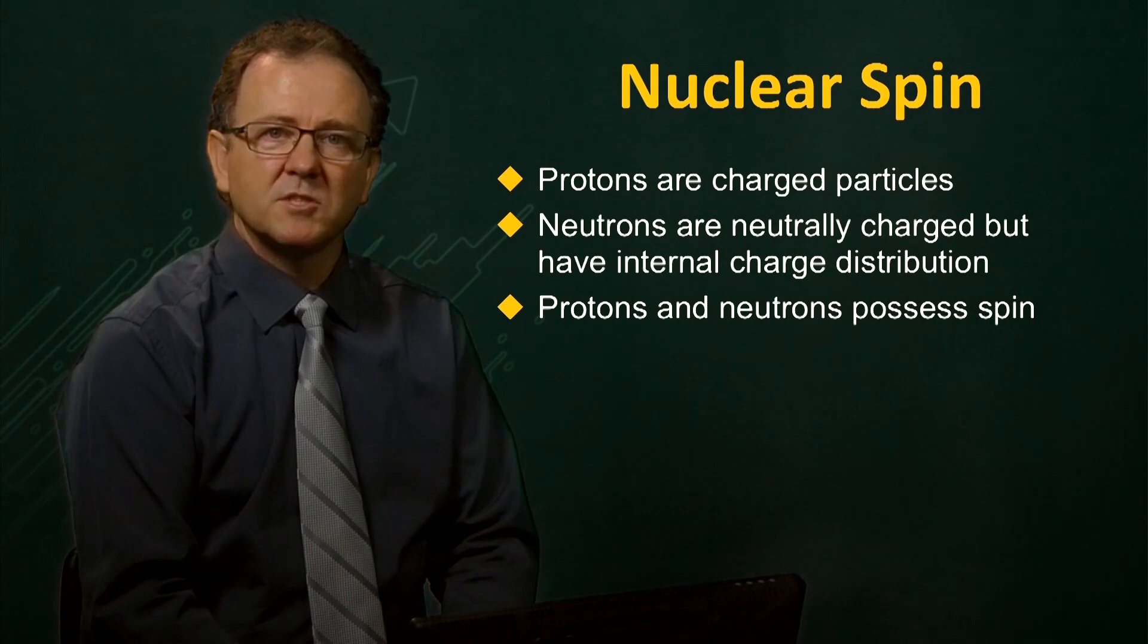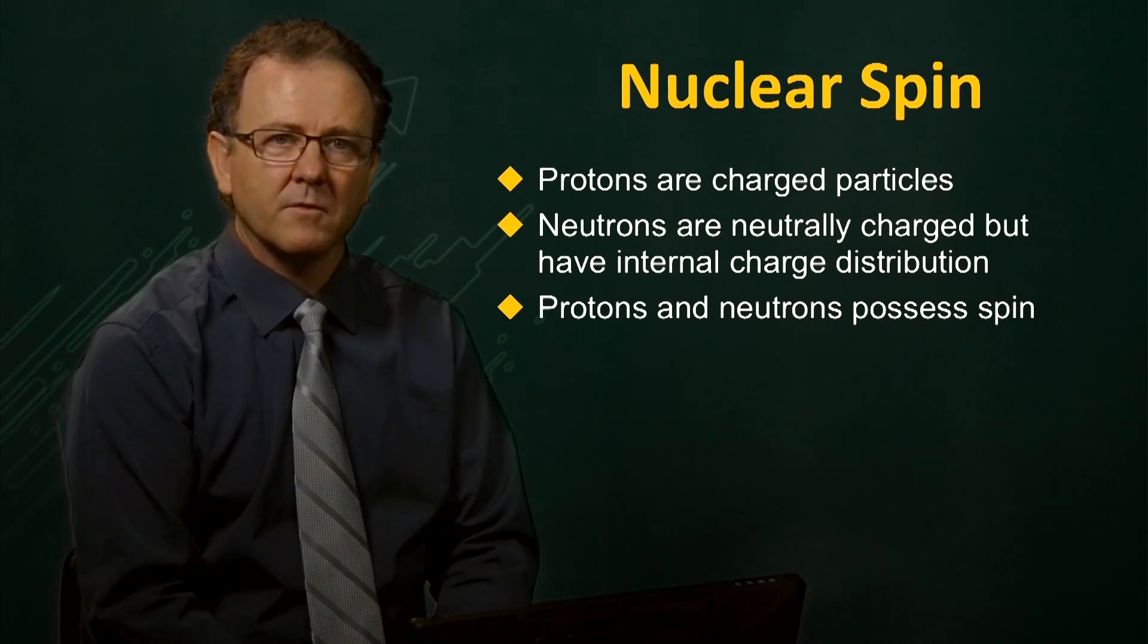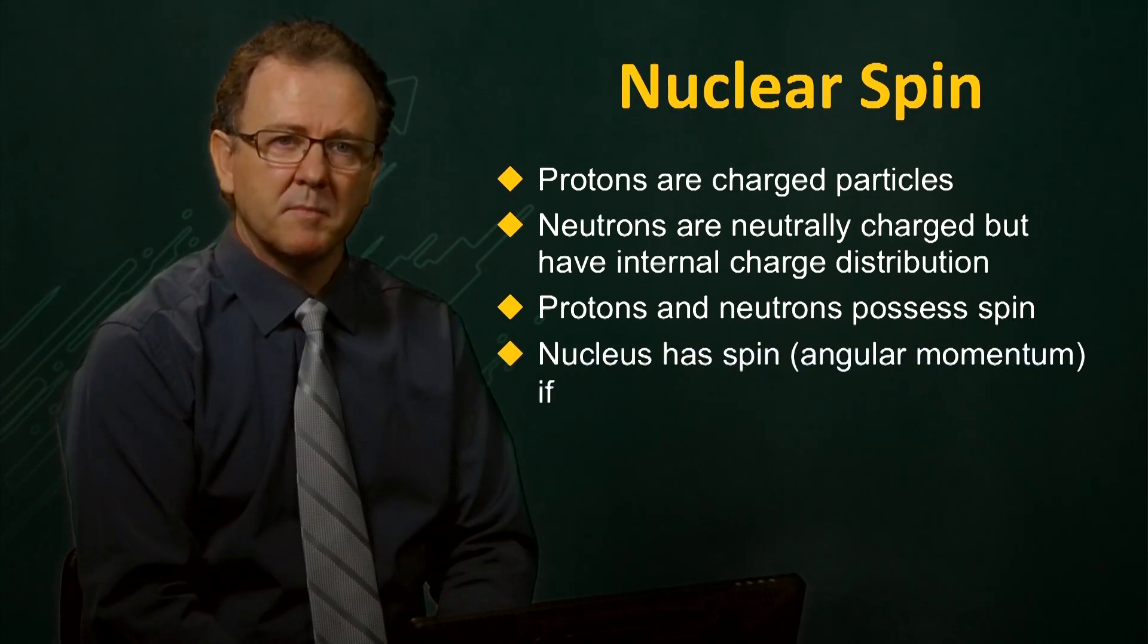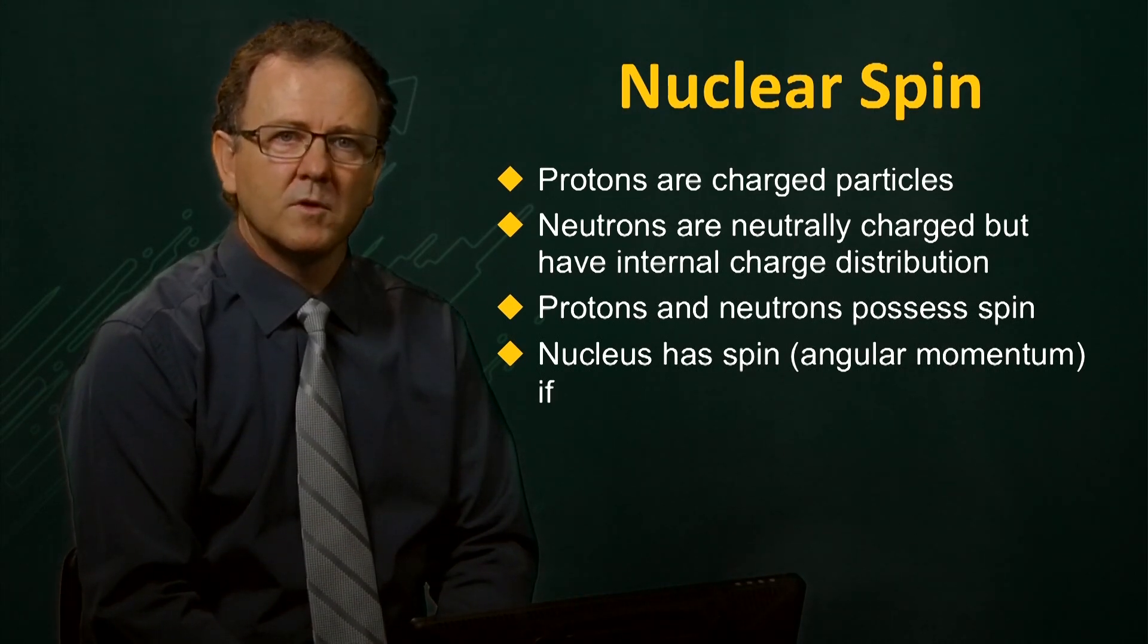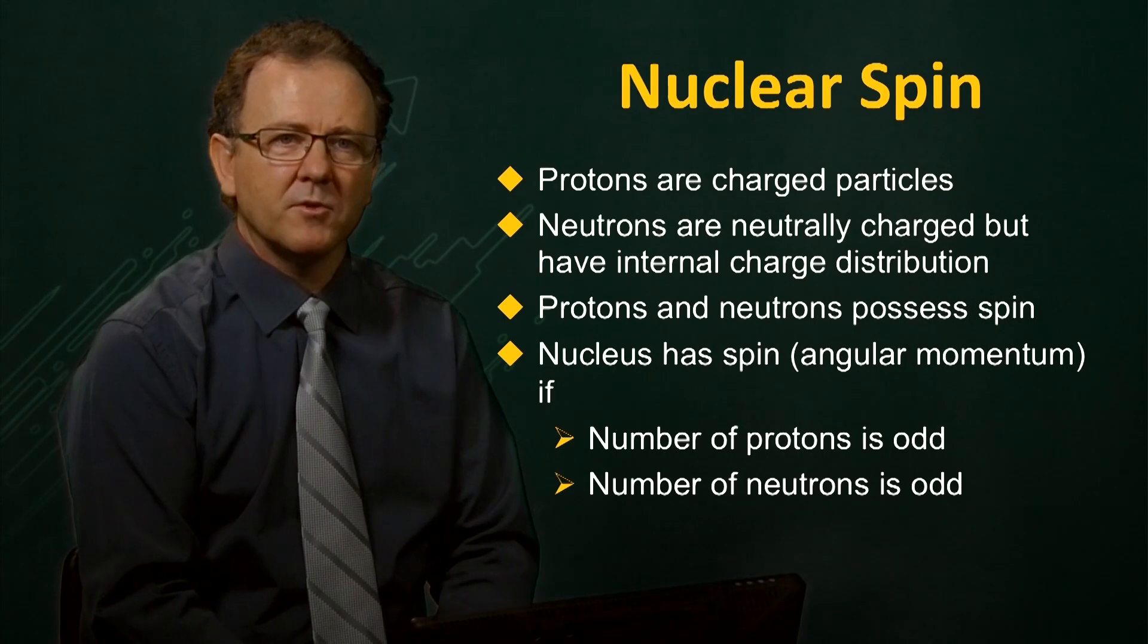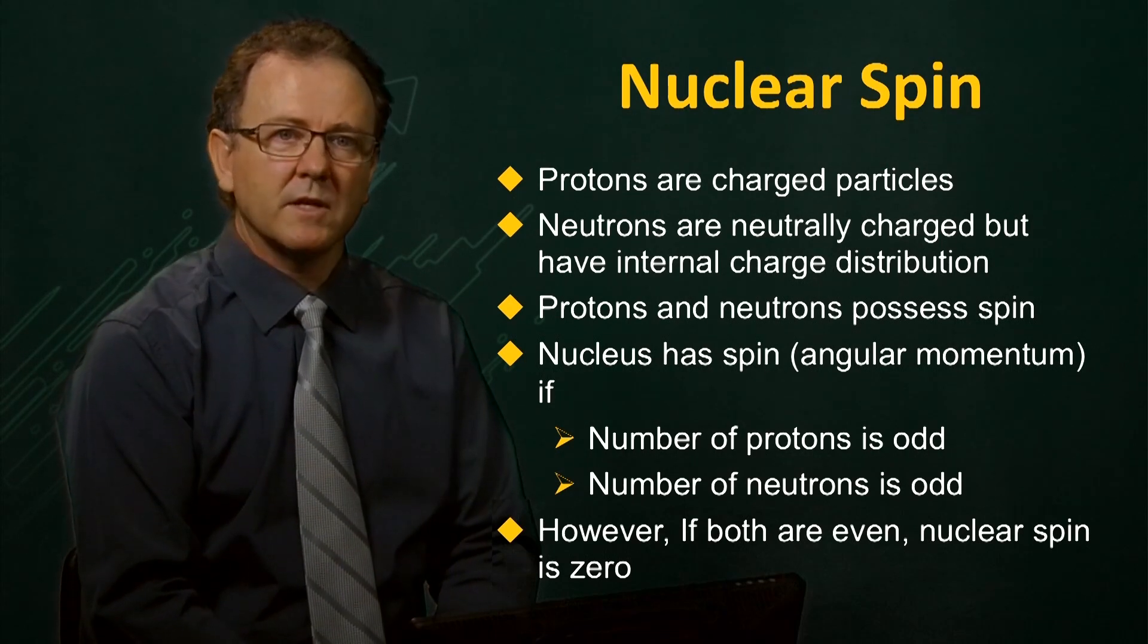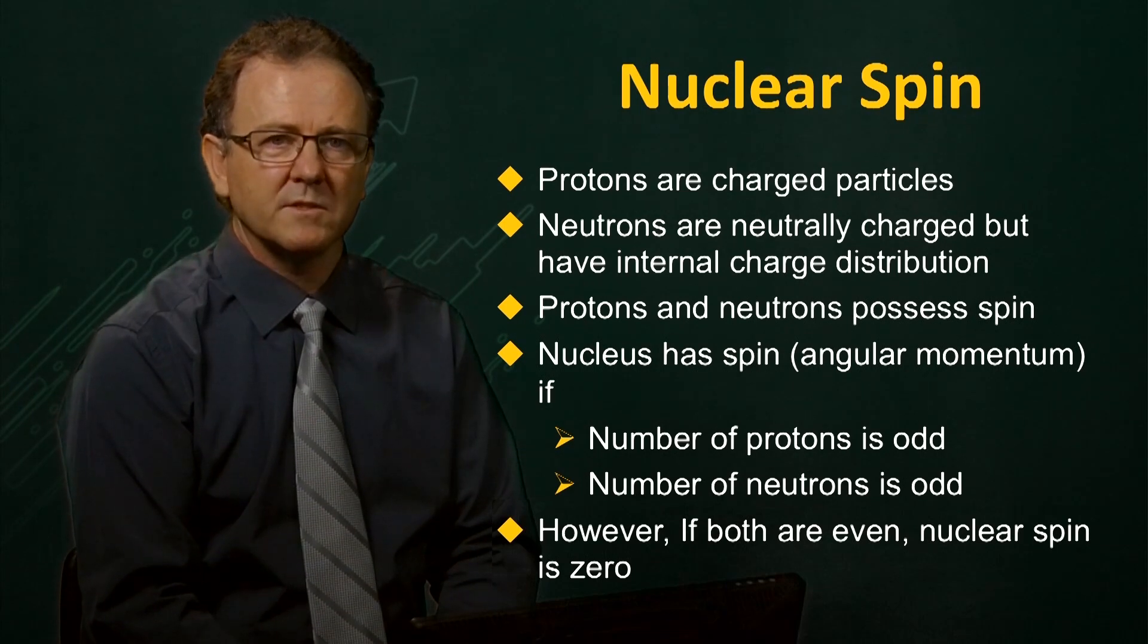The proton and neutron are both spinning and so contribute to the angular momentum of the nucleus. We find that a nucleus has spin if it contains an odd number of protons or if there is an odd number of neutrons. But if the number of protons and neutrons are both even, then the nucleus will have zero spin. It is this property of nucleus spin that is essential for a nucleus to give rise to a magnetic resonance signal.